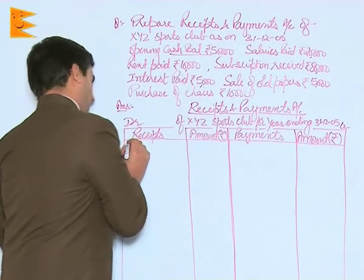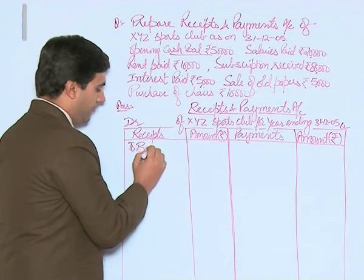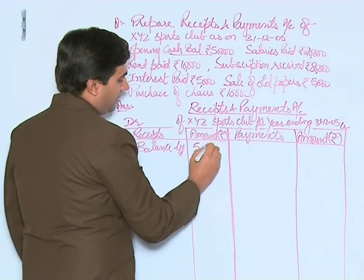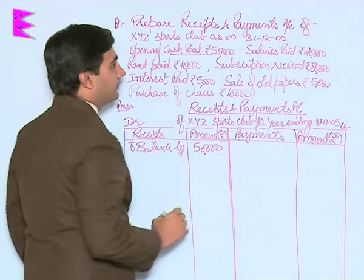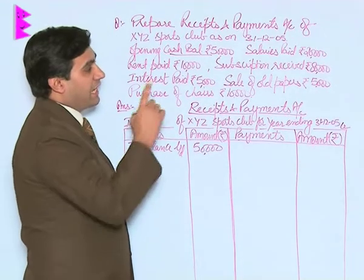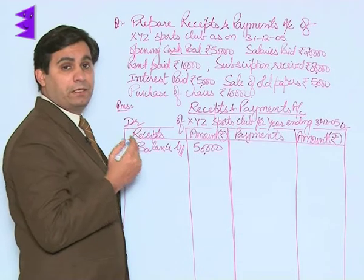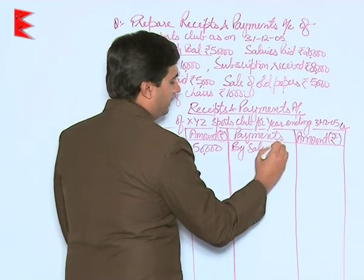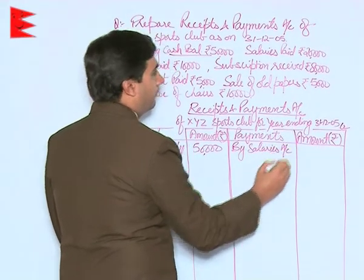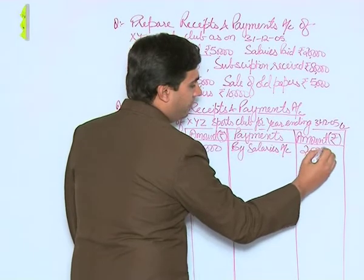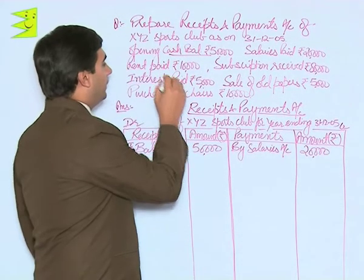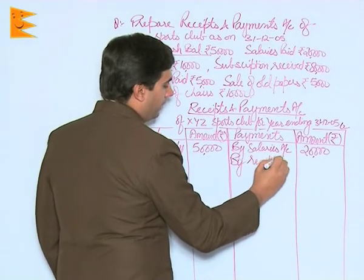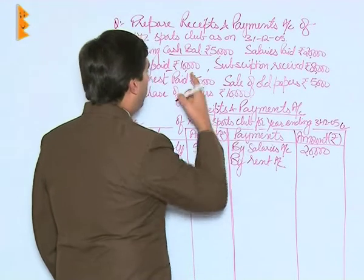Whether cash is received or paid on account of capital or revenue items, everything has to be included in the receipts and payments account. We start with the opening cash balance — to balance brought down — which is 50,000. Then we have salaries paid; since it involves payment, on the credit side we write 'by salaries', which is 20,000. Then rent paid — again a payment — 'by rent account', 10,000 rupees.